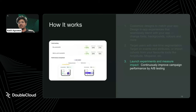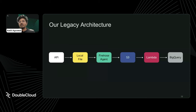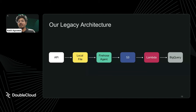To track all user activities, we have to process a lot of events. We had a legacy architecture where we got events from the API — initially writing directly to BigQuery, but due to BigQuery limits we created a pipeline: write to a local file, forward to Firehose via a Firehose agent, AWS Firehose delivers to S3, then a Lambda picks up and inserts into BigQuery every 5 minutes.